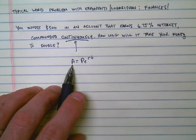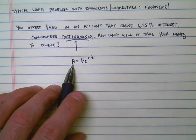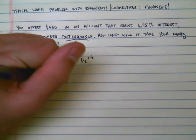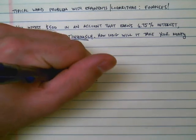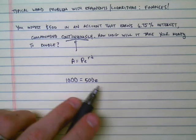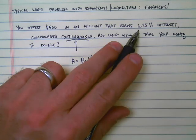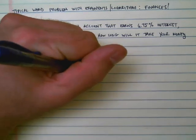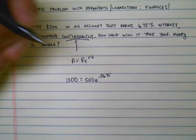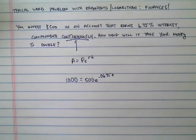So in this equation, I need to be able to pull out these values. A, the amount that I'm interested in, is how long is it going to take to have $1,000? Well, the amount I put in is 500, and it's going to be equal to 500e^r, which is 6.75%. Now, I need to put that in decimal form, which means I'm going to write it as .0675, and we're solving for T.